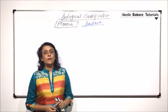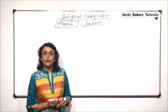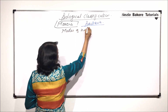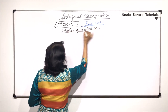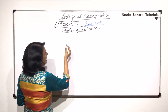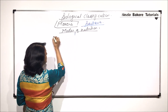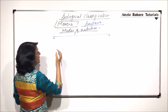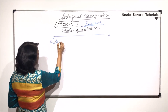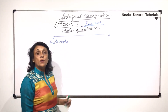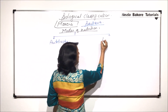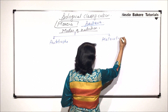In this video, we will talk about the various modes of nutrition seen in case of bacteria. Modes of nutrition means how do these bacteria obtain their nourishment. We can classify bacteria into two main categories on the basis of this mode. Those which can synthesize their own nourishment are known as autotrophs, and those which cannot synthesize their own food and obtain nourishment from other organisms are called heterotrophs.